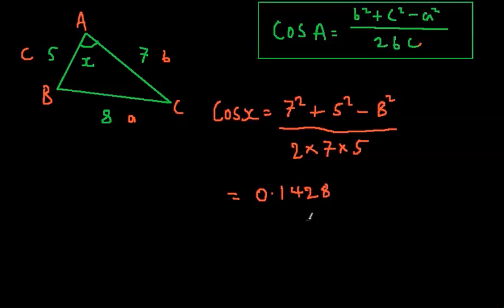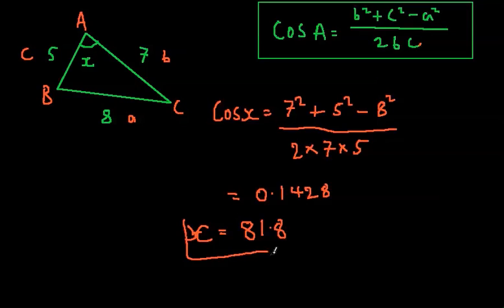And once again, that's obviously not going to be the angle there. So, we need to do the inverse of cos, so we get x equals, you know, inverse, holding shift and cos. x will therefore equal 81.8 to 3 significant figures.